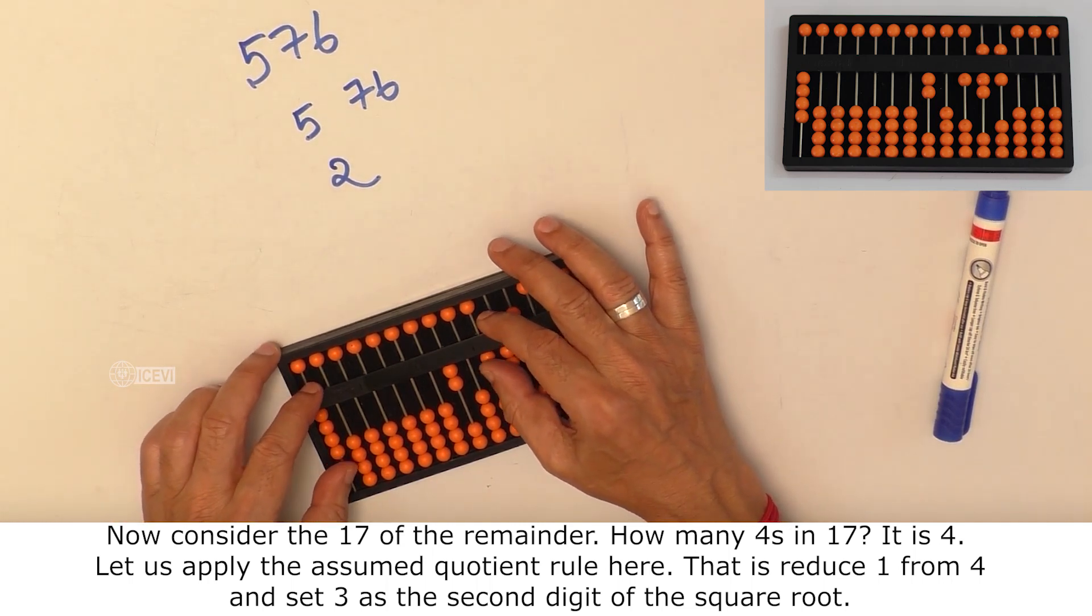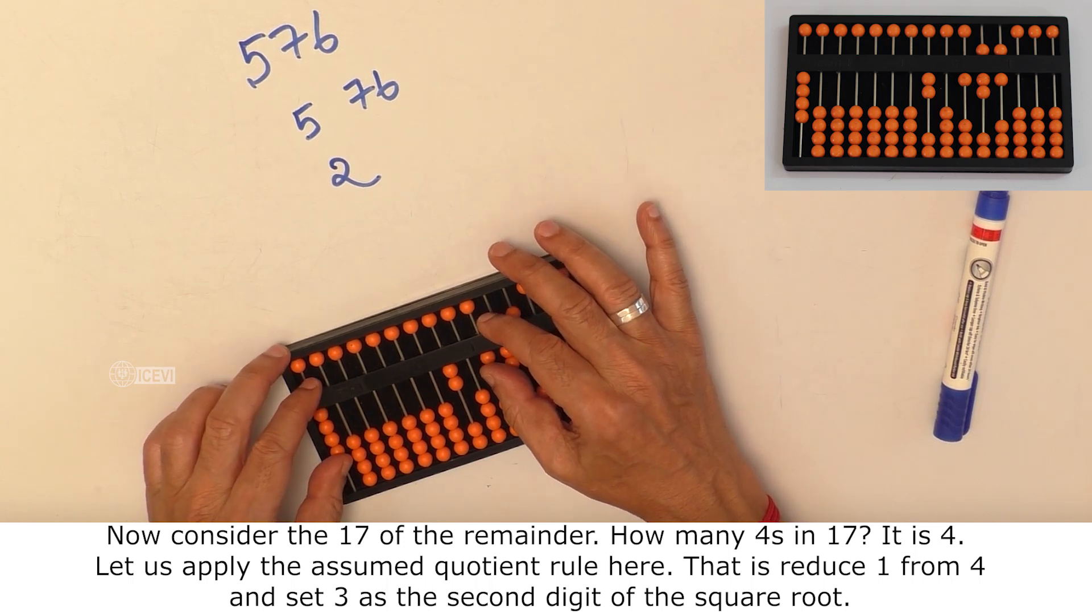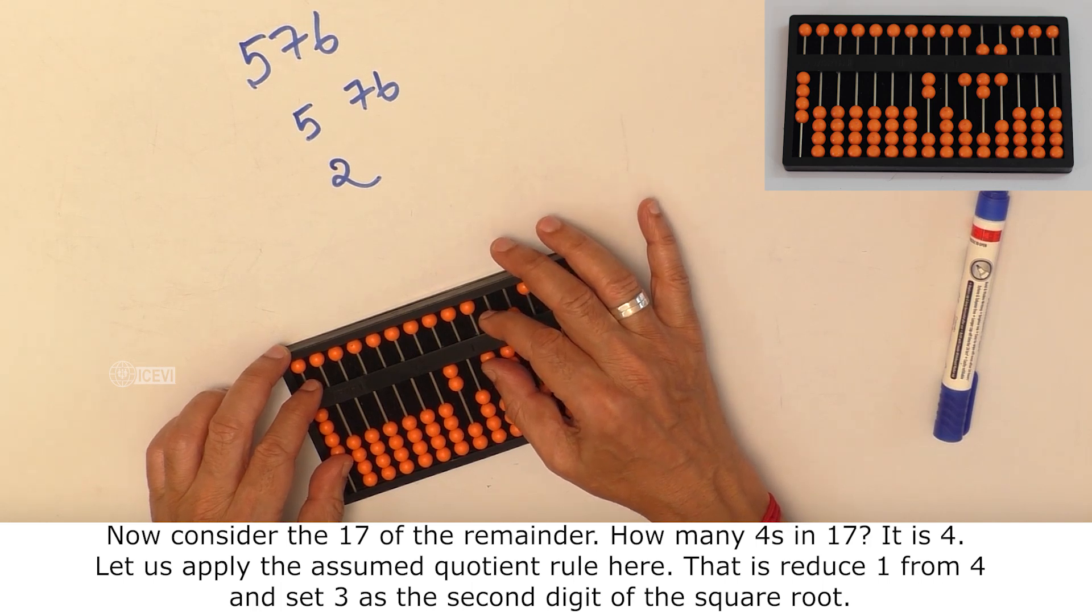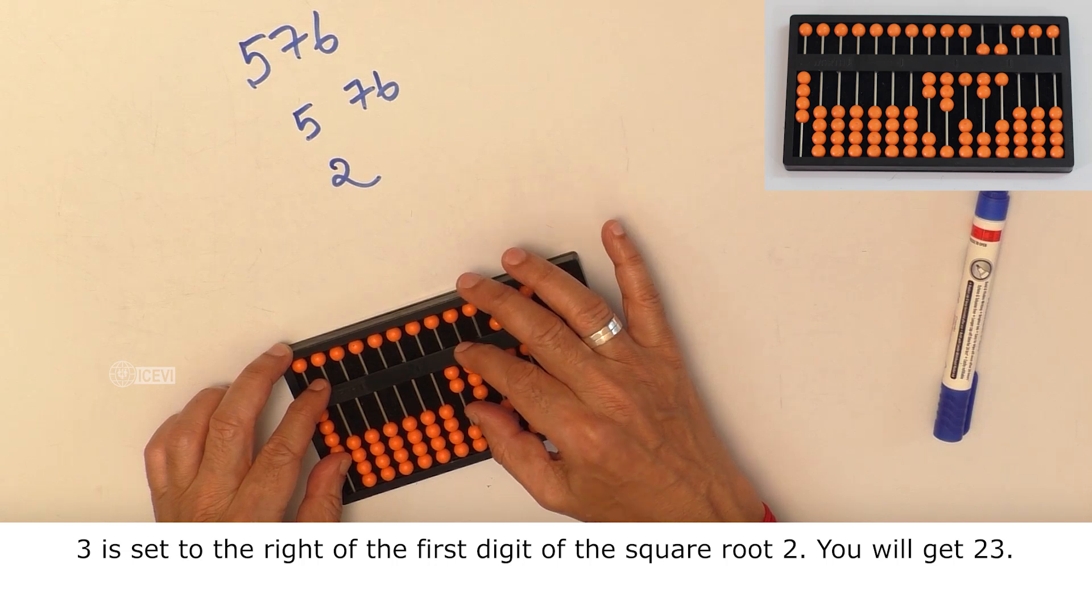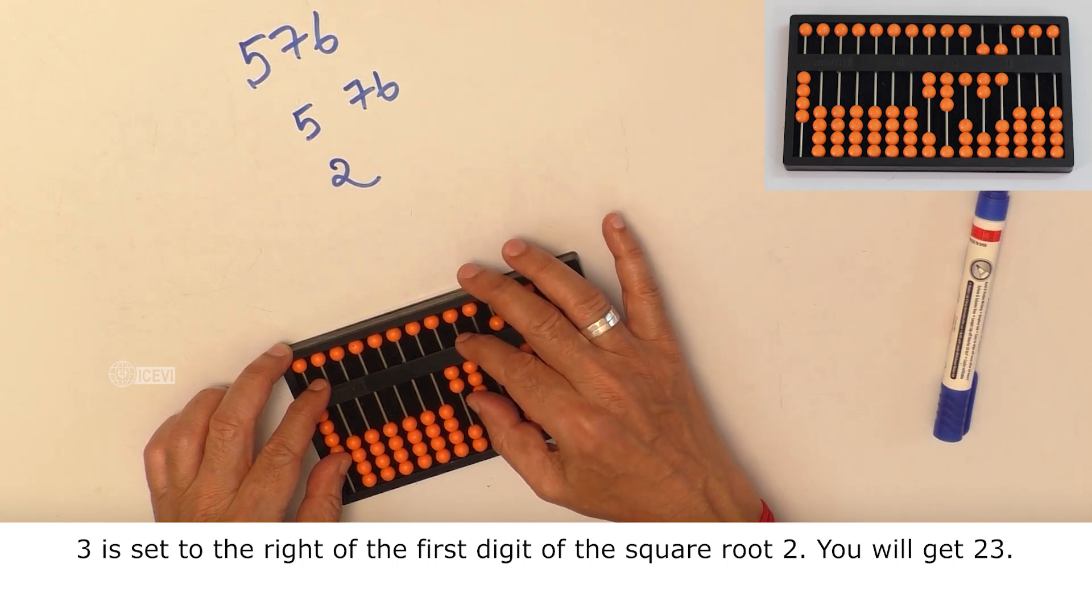That is, reduce 1 from 4 and set the number 3 as the second digit of the square root. 3 is set to the right of the first digit of the square root 2. You will get 23 now.